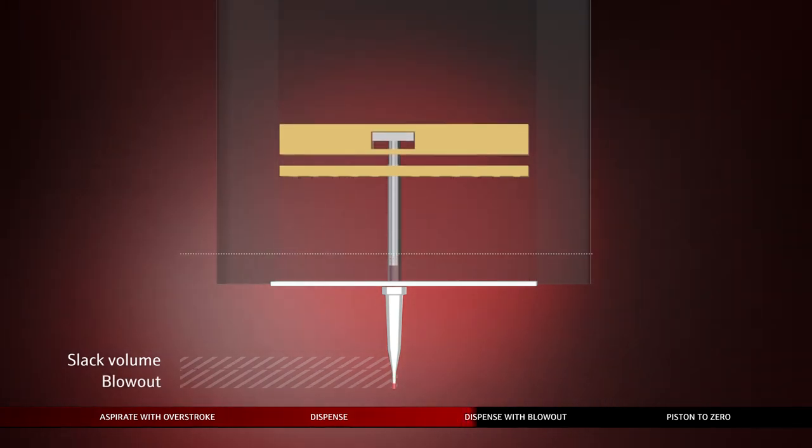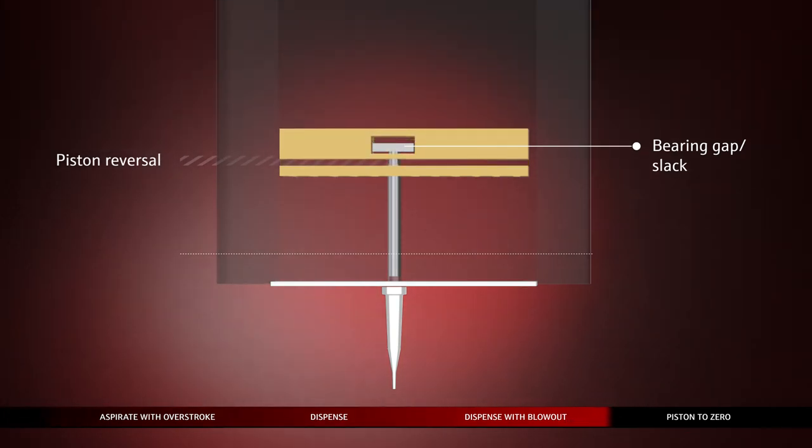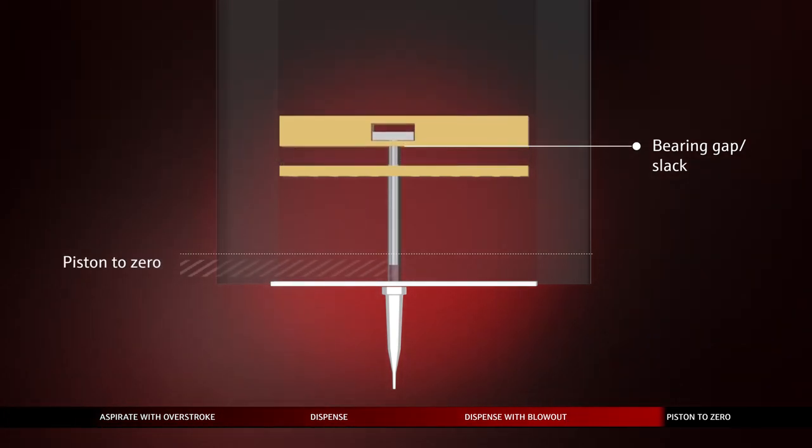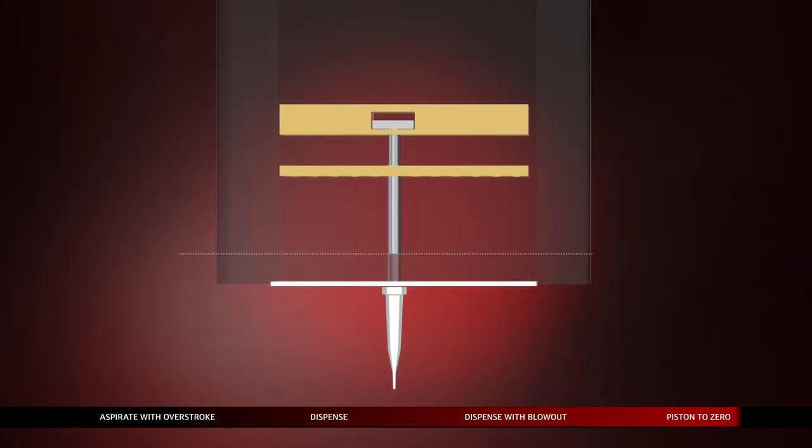The additional overstroke volume and the blowout volume is then transferred back to the source or into the liquid waste. The tips are empty and the pistons move back to the pistons to zero line, the starting position, to be prepared to start a new piston cycle.